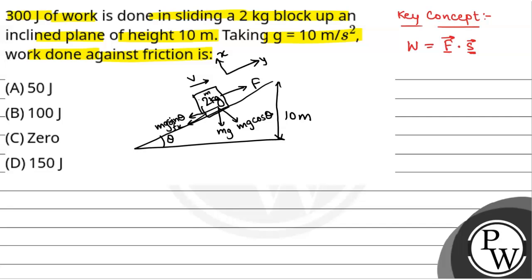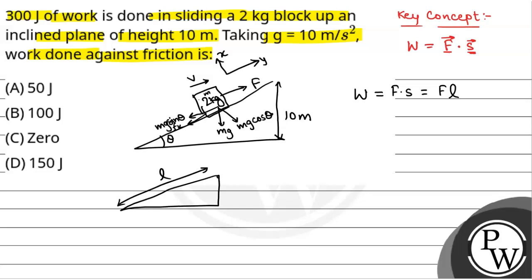The work done by force F to displace the block through a distance L along the inclined plane will be F dot s, equal to F·L. If L is the length of the incline and h is the height, from the right-angle triangle we have L equal to h divided by sin theta. So work done equals F into h over sin theta — or as written here, F into h cos theta.